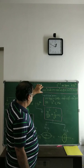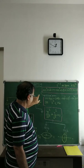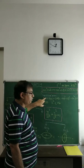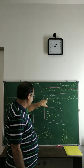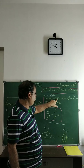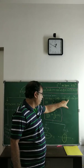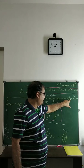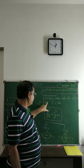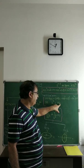This second degree equation will represent an ellipse provided Condition A and Condition B are both satisfied. Condition A is: abc + 2fgh - af² - bg² - ch² must not equal zero. Condition B is: h² must be less than a times b.